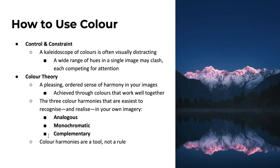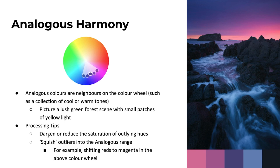First up in the colour harmonies is the analogous harmony. Analogous colours are neighbours on the colour wheel. We can achieve this when the range of colours present in our image is very nearby on that wheel. For example, we might have a lush green forest with some small patches of yellow light. In this seascape example, it's a very blue, magenta, purple scene — no reds or yellows in the sky — with a nice soft gradient from pinks and purples to blue in the sky, leading around to blue in the rocks and water. These analogous colours really work well and are quite pleasing to look at.